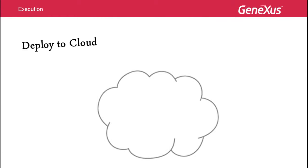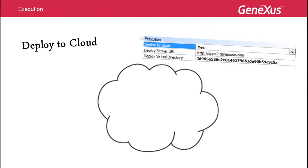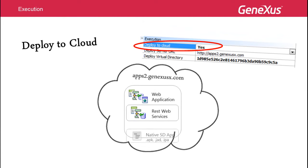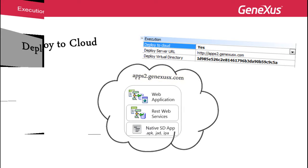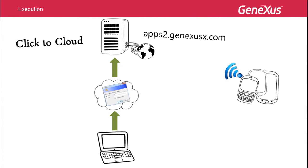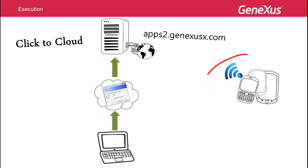GeneXus provides another option to run an application by installing it on a cloud with a single click, simply by setting the 'Deploy to Cloud' property of the default generator to Yes. Upon pressing F5, the web application is installed on the cloud and the smart device application is installed on the device. By default, the apps2.genexususx.com server in the Amazon cloud is used, specifically available to prototype GeneXus applications. GX technical credentials are requested during generation, and once installed, the app can be accessed from the device by consuming REST services directly from the application on the cloud.